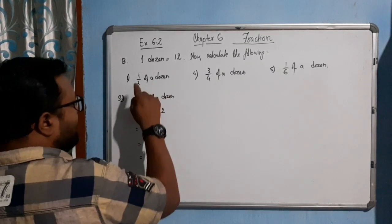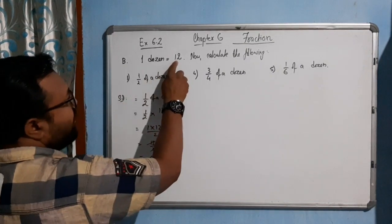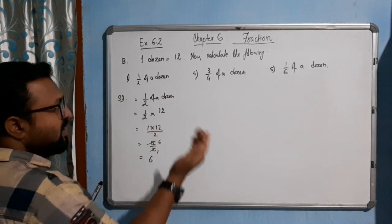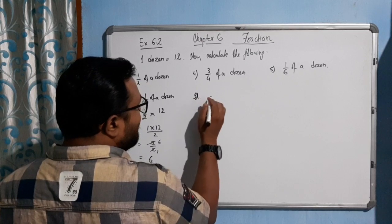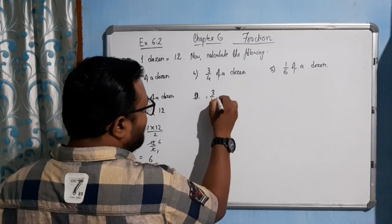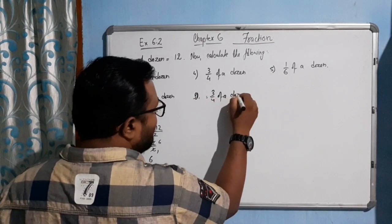So half of a dozen will be how much? 6. It is very clear. See, half of 12 is 6. 6 plus 6 gives you 12. So 12. Now come to this one, 4. Here also 3 by 4 of a dozen.